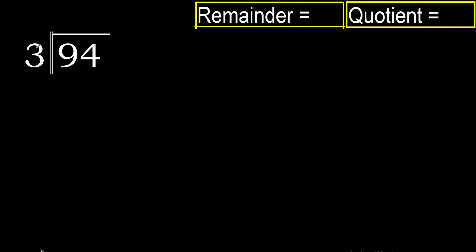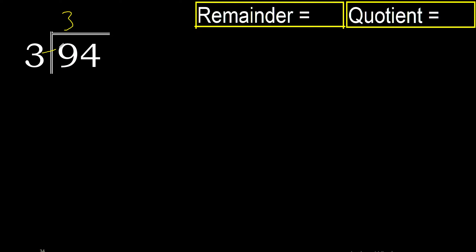94 divided by 3. Starting with 9: 9 is not less than 3, so we work with 9. 3 multiplied by 4 is 12, but 12 is greater than 9, therefore not. 3 multiplied by 3 is 9, and 9 is not greater than 9, therefore yes.